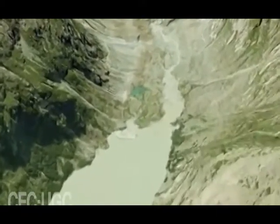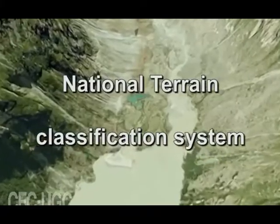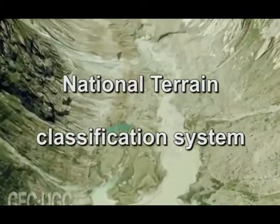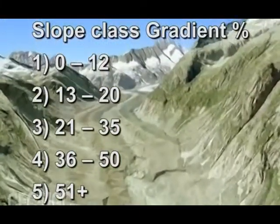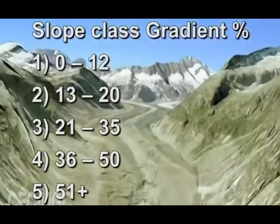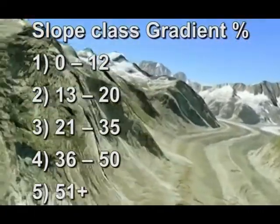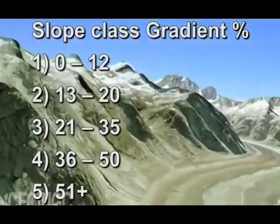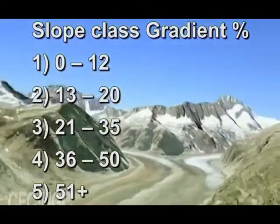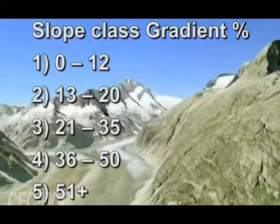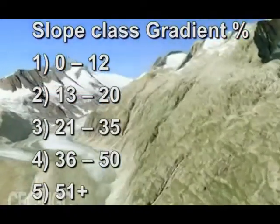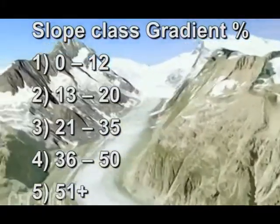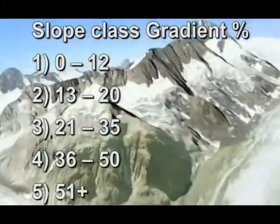Five slope classes are recognized by the National Terrain Classification System. Slope class with gradient percentage: Slope 1 is 0 to 12%, Slope 2 is 13 to 20%, Slope 3 is 21 to 35%, Slope 4 is 36 to 50%.